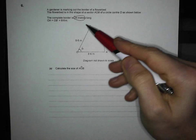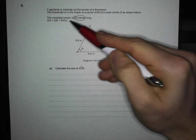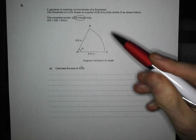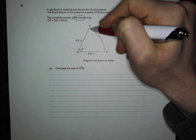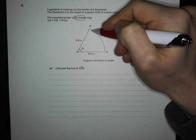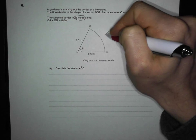Well, if we know the complete border is 28 metres long and we know that that bit is 8.6 and that bit is 8.6, straight away we're going to be able to work out what this bit is. Because the complete border is 28, so we're going to get what this bit is here.